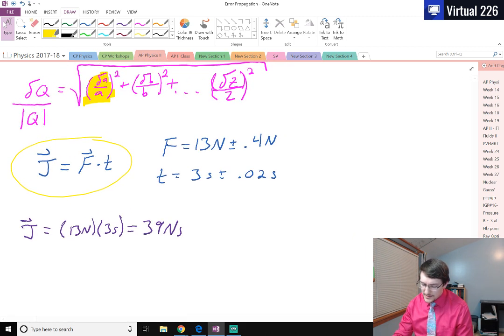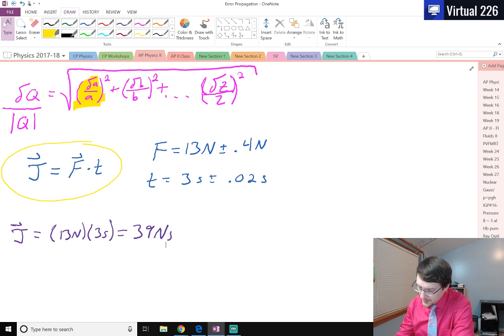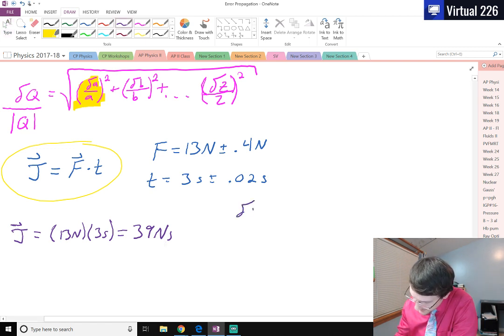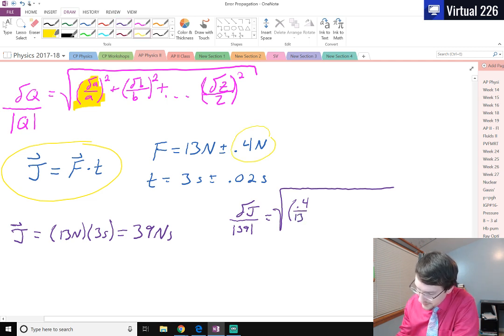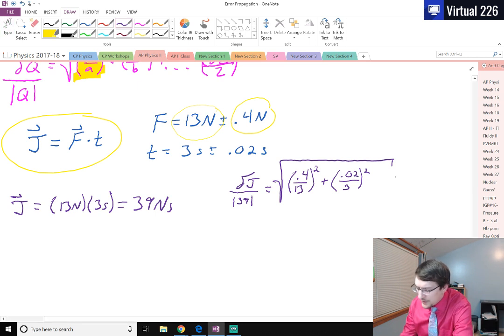If we need to get the deviation of J though, we know that the deviation of the impulse per the value of the impulse, that's the absolute value of 39 newton seconds, has to equal in quadrature 0.4 over 13, that's the deviation 0.4 divided by the quantity of F, 13, so 0.4 over 13 squared, plus and then our second quantity is 0.02 divided by 3 squared.